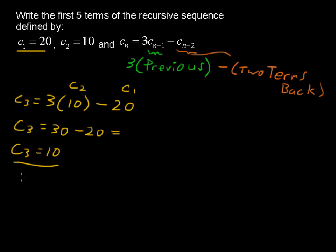All right, then C sub 4. C sub 4 equals three times the previous term of 10 minus 2 terms back, so C sub 2, and C sub 2 is 10. So C sub 4 will equal 30 minus 10, or C sub 4 equals 20.